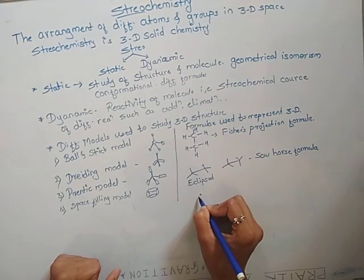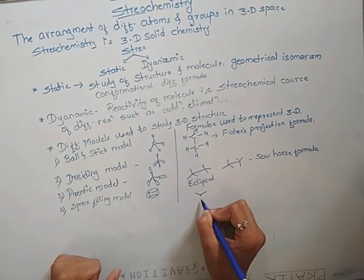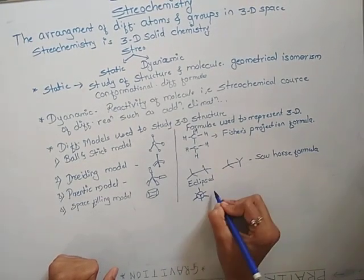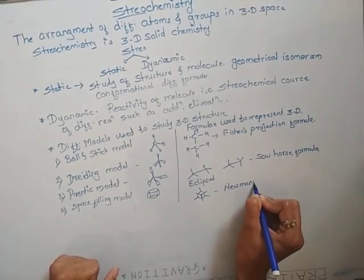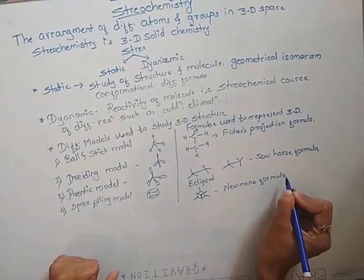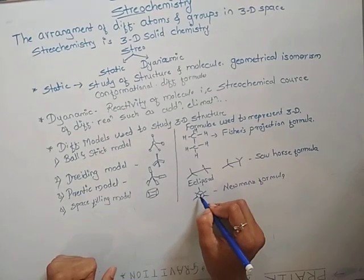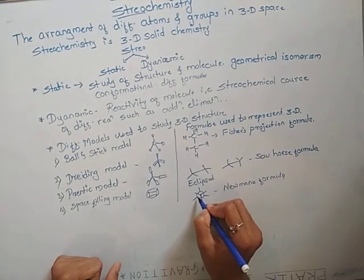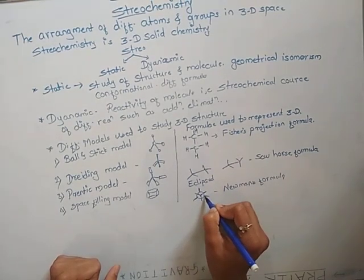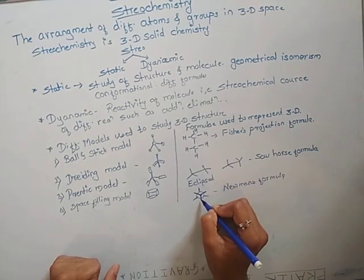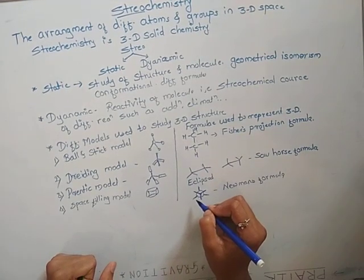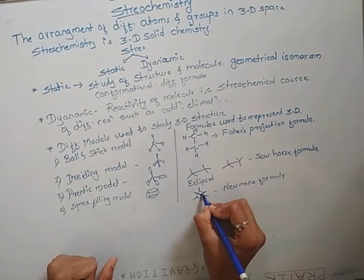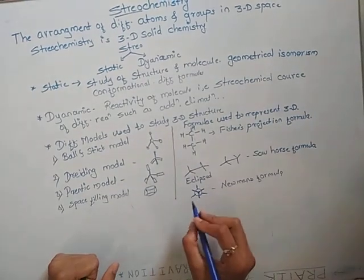In Newman's formula, two carbon atoms are represented by circles superimposed on each other. The bonds appear just like spokes of a cycle. In Newman's formula, molecules are seen from front to back — the observer sees the molecule from front to back.